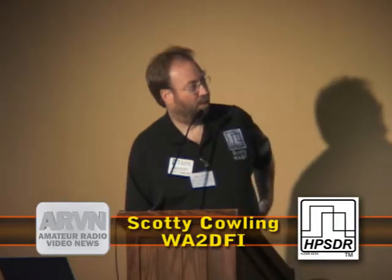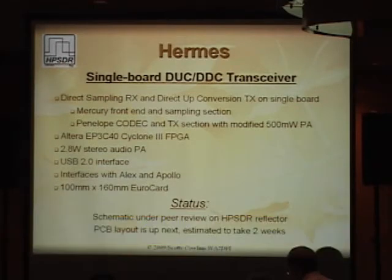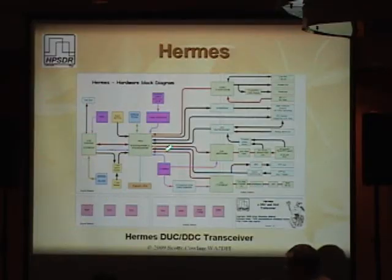This is the fun one. They took the best pieces off of Mercury, Penelope, and Ozzy and pasted them all onto one board. Here's the block diagram. We took a single FPGA — the biggest FPGA we could buy that's not a BGA type — the biggest leaded one we could get, which is a Cyclone 3C40. Basically all the components of Ozzy, Penelope, and Mercury are all going to be mashed together into this one FPGA. We picked the biggest one we could get.